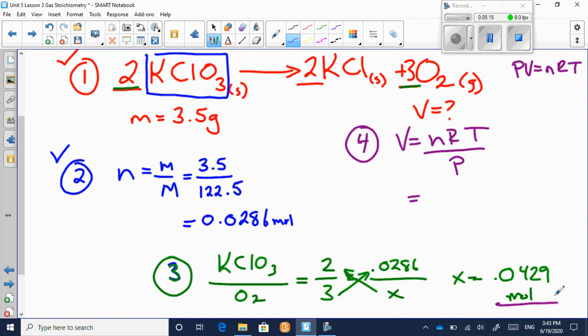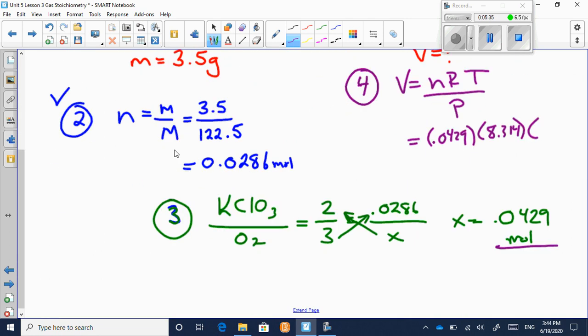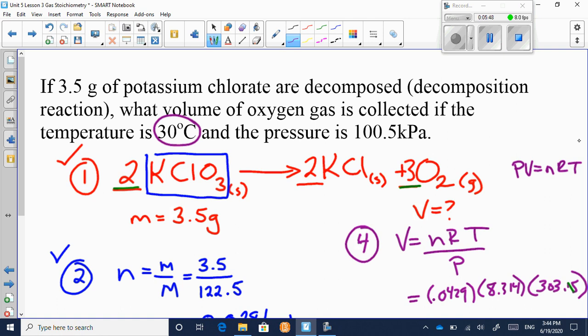So the number of moles we calculated was 0.0429 times 8.314 times the temperature. It says 30 degrees, but we've got to convert that to Kelvin. So it's going to be 273.15 plus 30 is 303.15 Kelvin. I'll just show that. I'm going to come up here with that, and I'm going to say 30 plus 273.15 is 303.15 Kelvin.